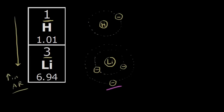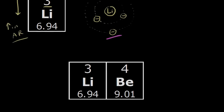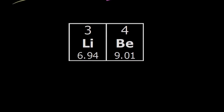Let's look at period trends next. As you go across a period, you're actually going to get a decrease in the atomic radius. Let's see if we can figure out why by drawing some simple pictures of our atoms.